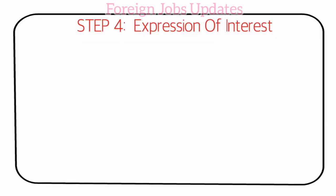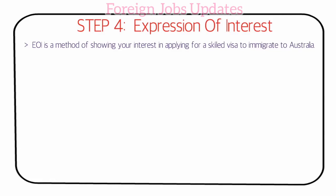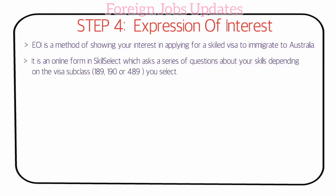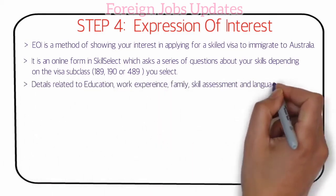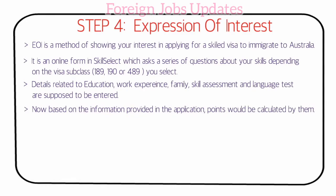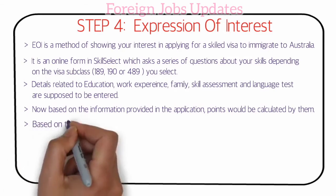Step 4 is the EOI — Expression of Interest. The EOI is the method of showing your interest in applying for a visa. The details depend on the visa subclass. Known Australian visa subclasses include 189 and 190. Your EOI includes details related to education, work experience, family and spouse information, and skill assessment results.